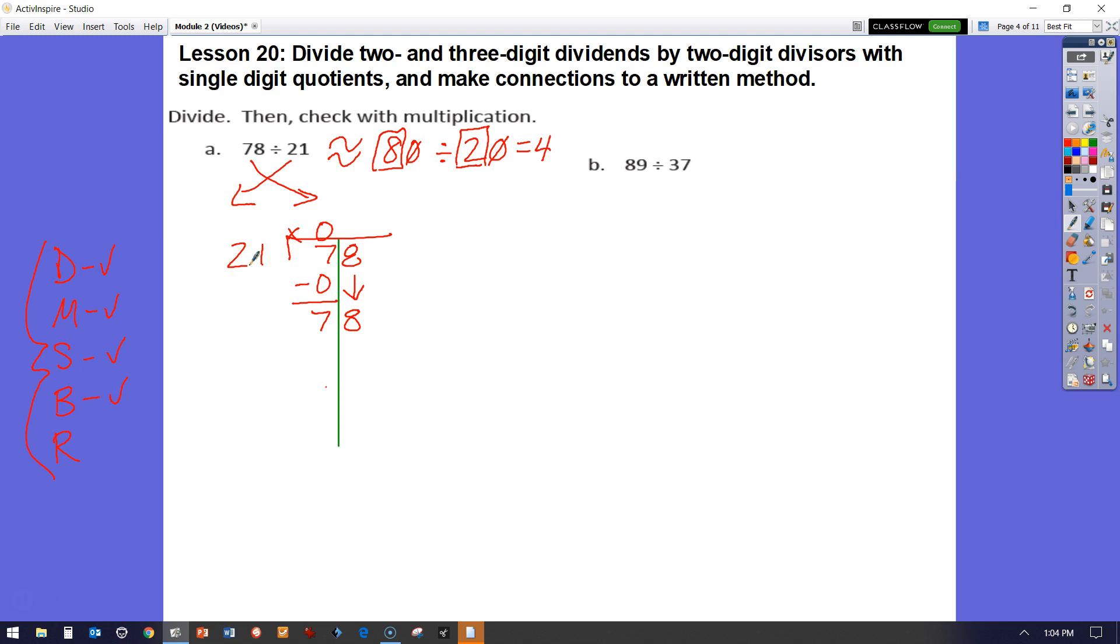I know that if I skip count by 21, I would have 21, 42, 63, and 84. 84 is too much. Hopefully you said stop. I know that 78 would fall in between 63 and 84. So that's 21 times 1, 21 times 2, 21 times 3. Three is going to be the number that I need.